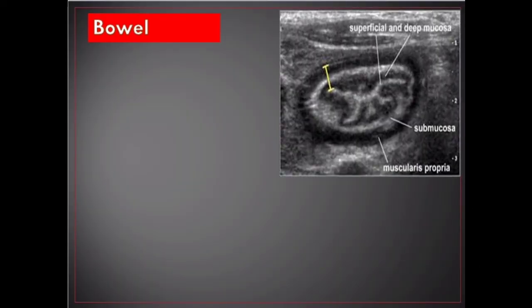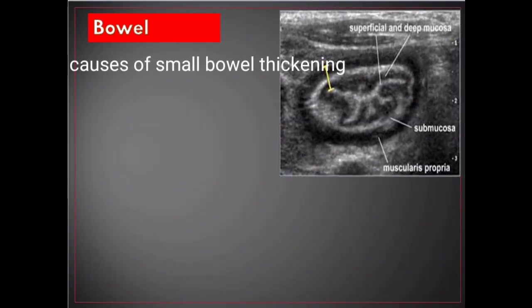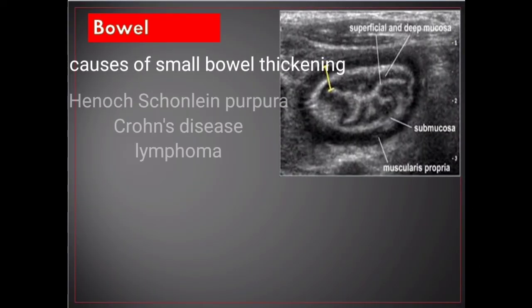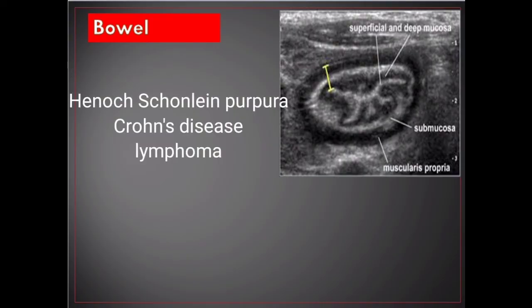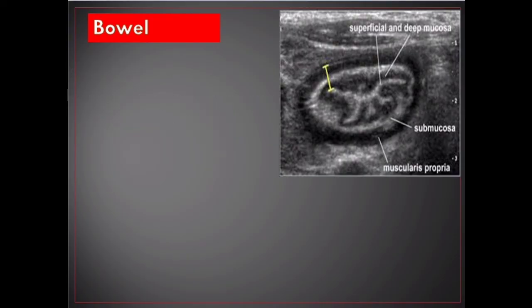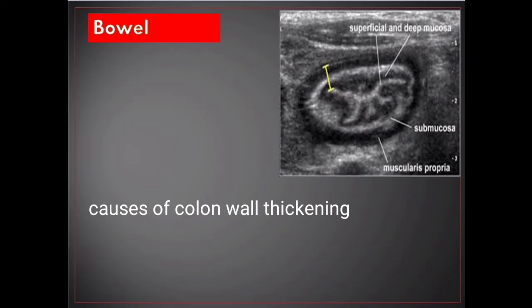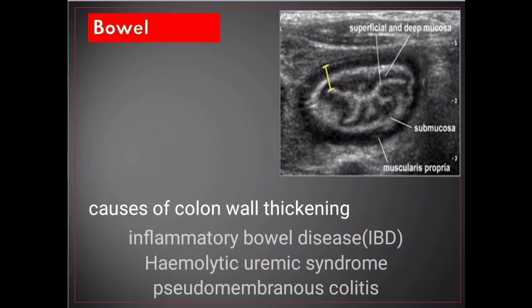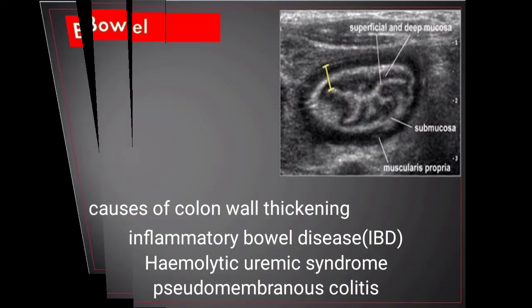Causes of small bowel wall thickening include ischemia, Yersinia, Crohn's disease, and lymphoma. Causes of colon wall thickening include inflammatory bowel disease, hemolytic uremic syndrome, and pseudomembranous colitis.